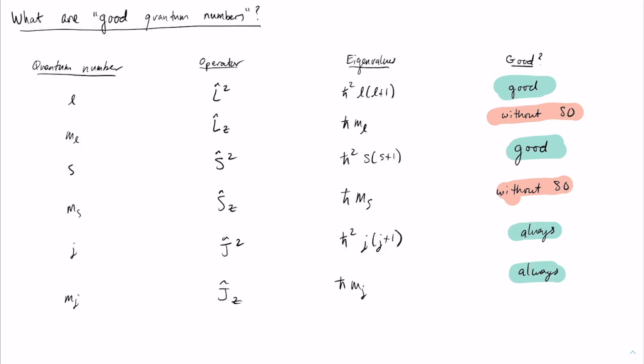So j leads to good quantum numbers, but this doesn't tell us yet what values of j to expect. In the next video, we will introduce how to add angular momentum so that we can deduce what values of j are allowed when we combine specific values of l and s.